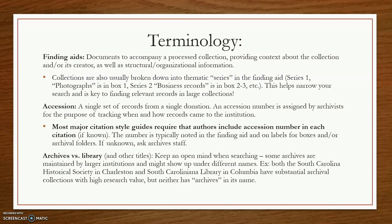You will also probably see reference to accessions or accession numbers. An accession is a single set of records from a donation, and an accession number is a tracking number assigned by the archivist to track this accession. Most major citation style guides will require that you include the accession number in your citation if it is known. You can usually find this number noted in the finding aid, or written on labels for the boxes, folders, and sometimes penciled into the documents themselves, usually in the upper left-hand corner.